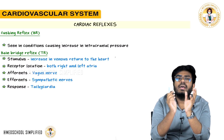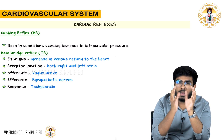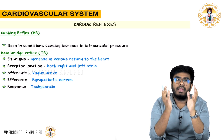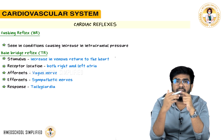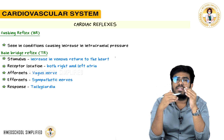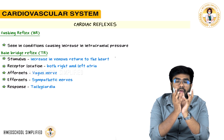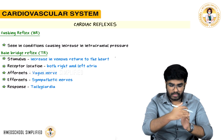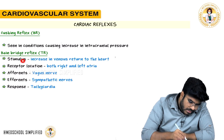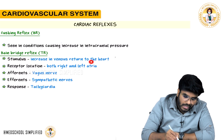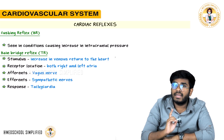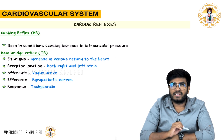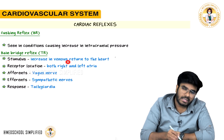When more blood enters the right atrium, meaning venous return is increased, the right atrium communicates to the central nervous system that more blood is coming, so heart rate must increase. The CNS increases sympathetic activity, causing heart rate to rise. The stimulus in Bainbridge reflex is increased venous return to the heart, especially to the right atrium — that's why it's also called the atrial reflex.